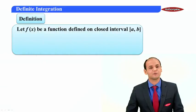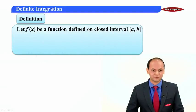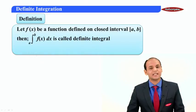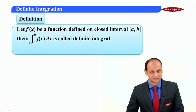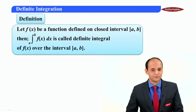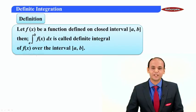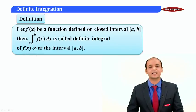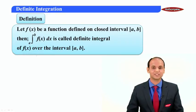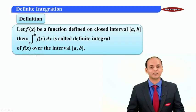The definition says that if y equals f(x) is a function in the interval a to b, then we define the definite integral as integral a to b of f(x) dx. This is defined in the interval a to b. Note that in indefinite integration, we just write integral f(x) dx, but in definite integration, we have introduced limits — that is why it is called a definite integral.